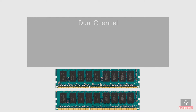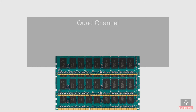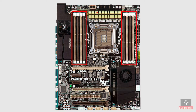If you want to add more memory in the future, you can add another set of matched memory sticks to keep dual-channel active. Intel Socket 2011 motherboards support quad-channel memory, which quadruples the memory bandwidth, and requires four sticks of memory. These motherboards have four to eight RAM slots. If the motherboard has eight slots, you can install four RAM sticks and still have four more available to add memory in the future and keep quad-channel enabled.